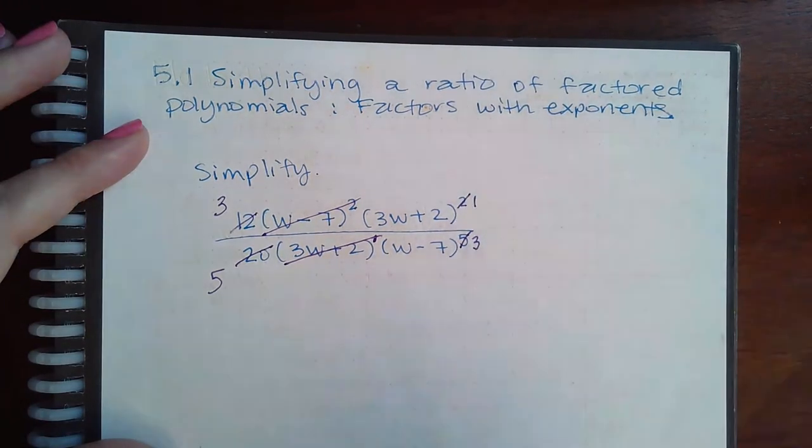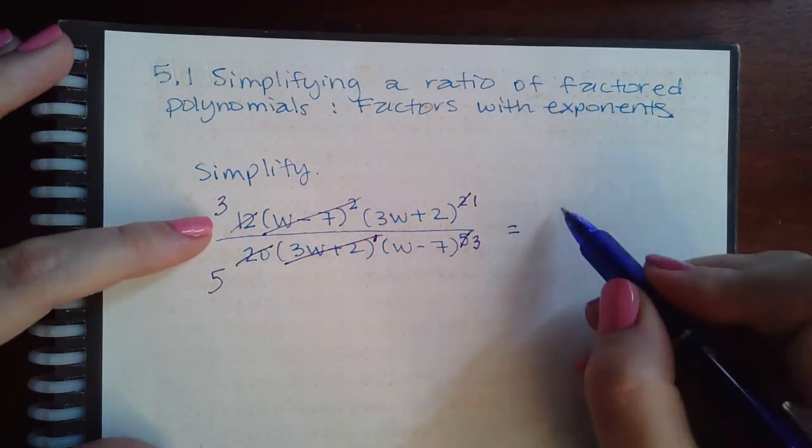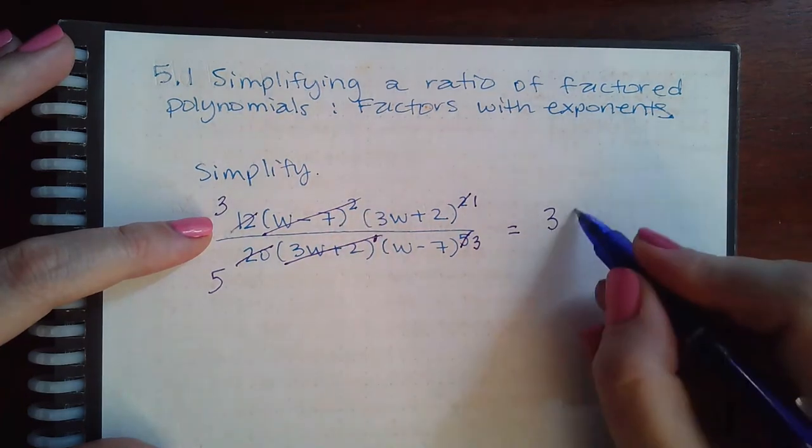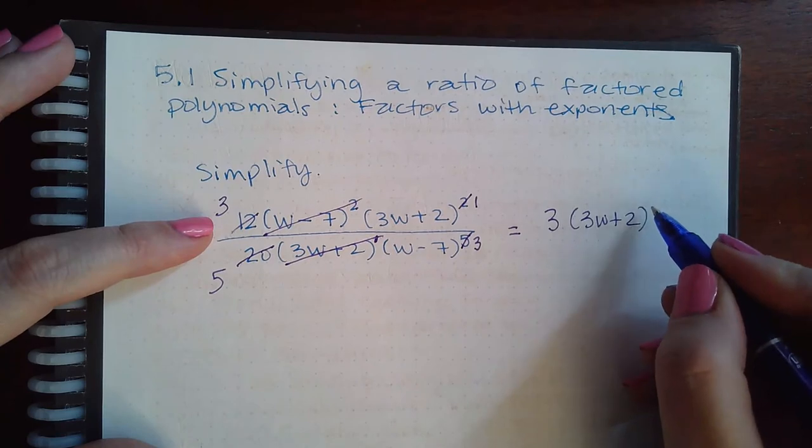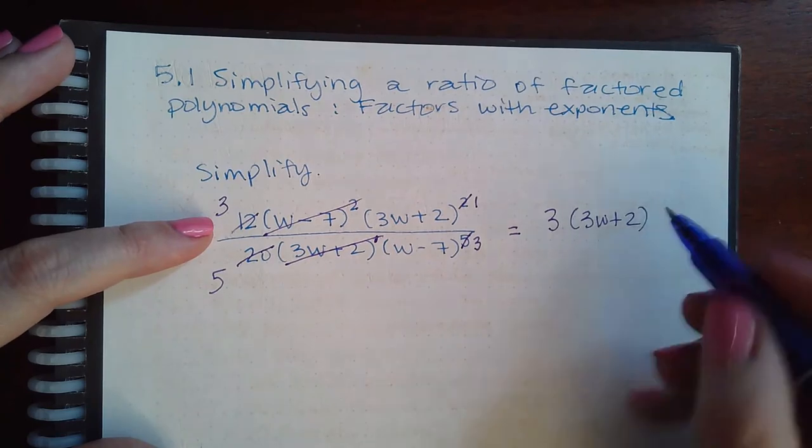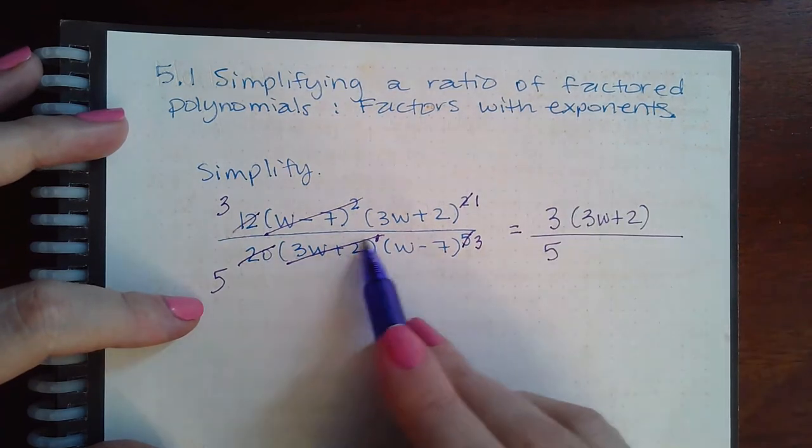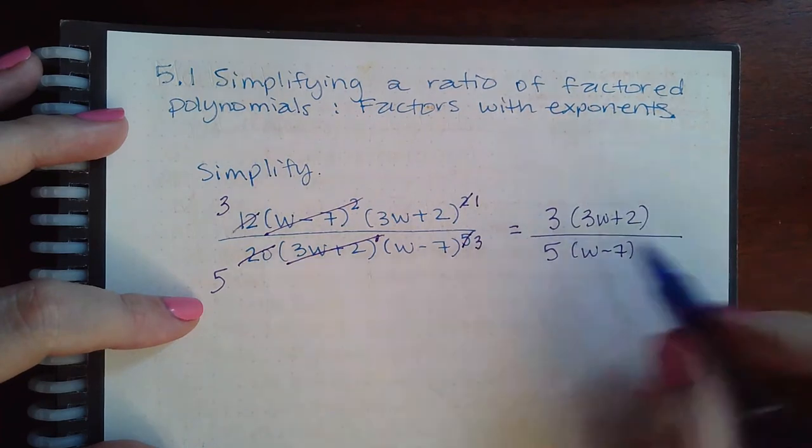So what all do I have left over? I have the three, this is completely gone, and then I have three w plus two to the one power, but you don't have to write the one power when it's just one. Then at the bottom I have this five, this factor is completely gone, but I do have a w minus seven but now it is to the third power.